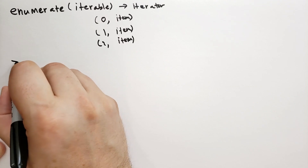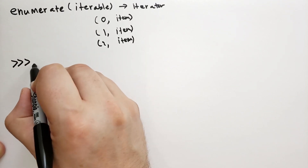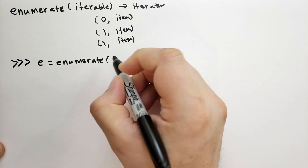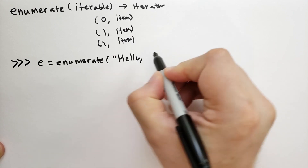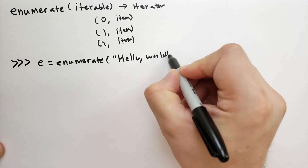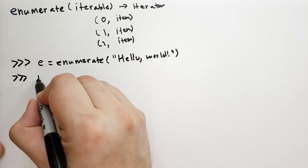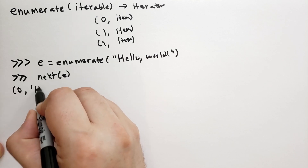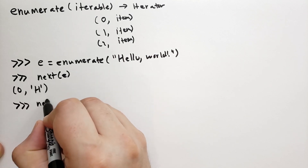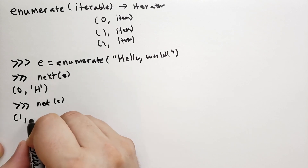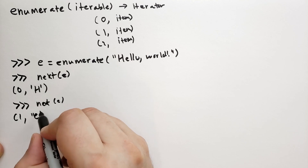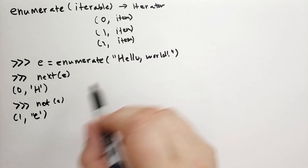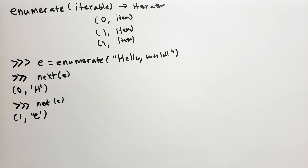As an example, try this in Python interactive mode: e = enumerate('hello world'). Calling next(e) gives you (0, 'h'). Calling next again gives (1, 'e'), then (2, 'l'), (3, 'l'), (4, 'o'), and so on.